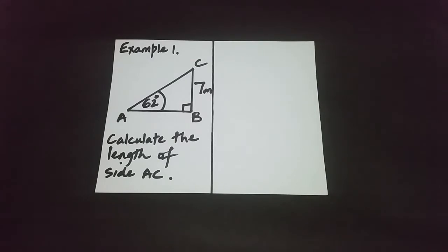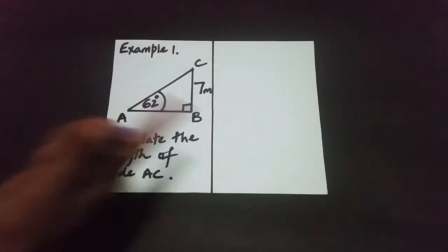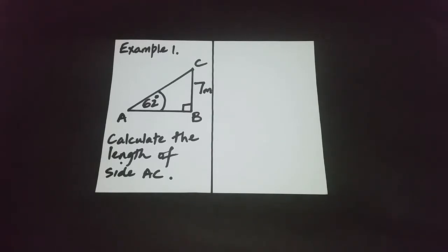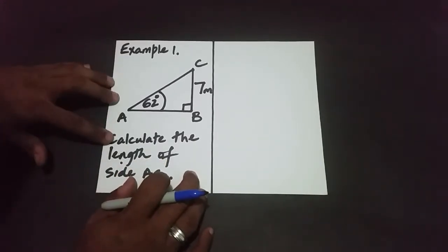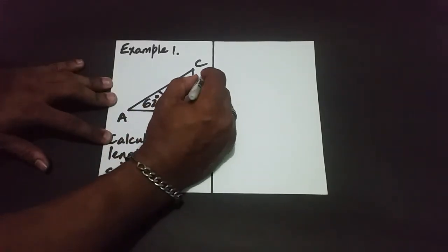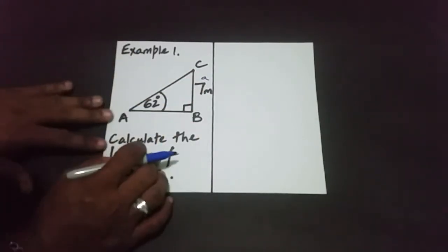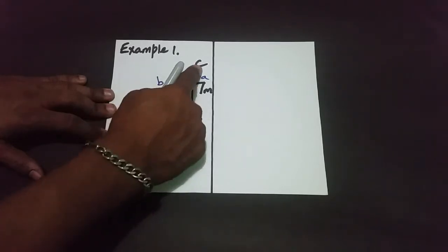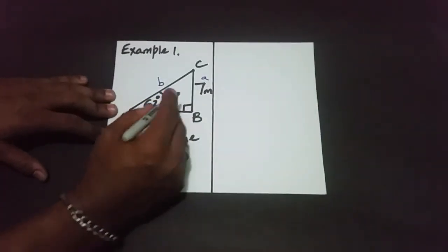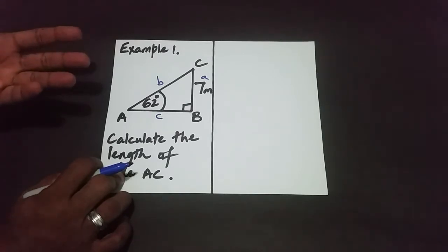Before using any trig rule you have to label the triangle. We put on common letters if they're not there. Capital A's opposite side is little a, which is the same as side BC — and BC is 7 meters. The side opposite vertex B is little b, which represents the length of AC. The side opposite vertex C is little c.